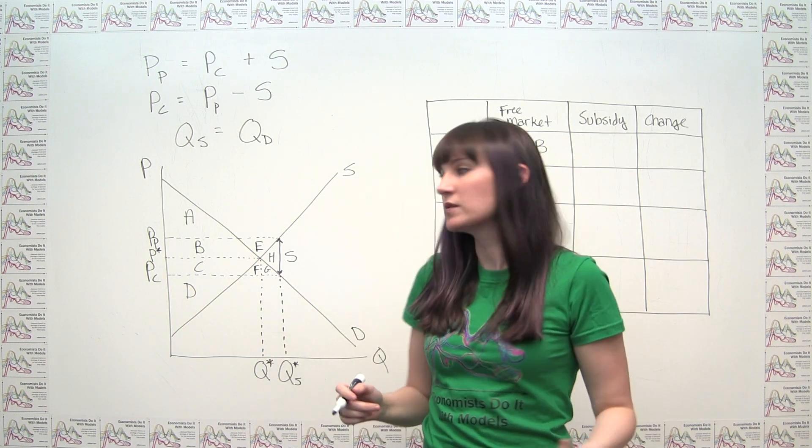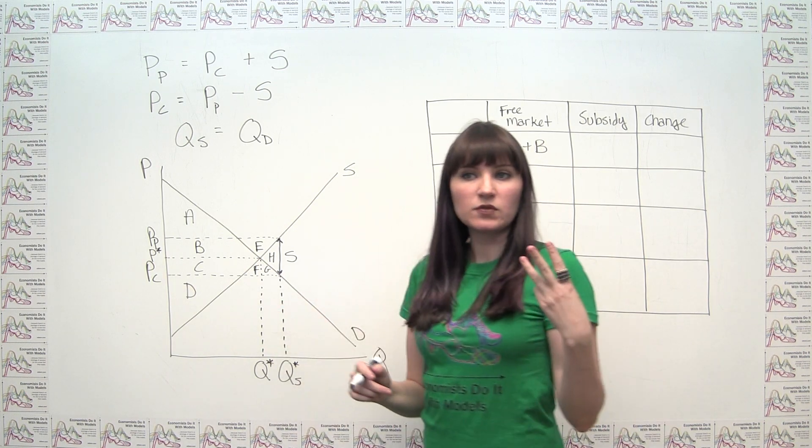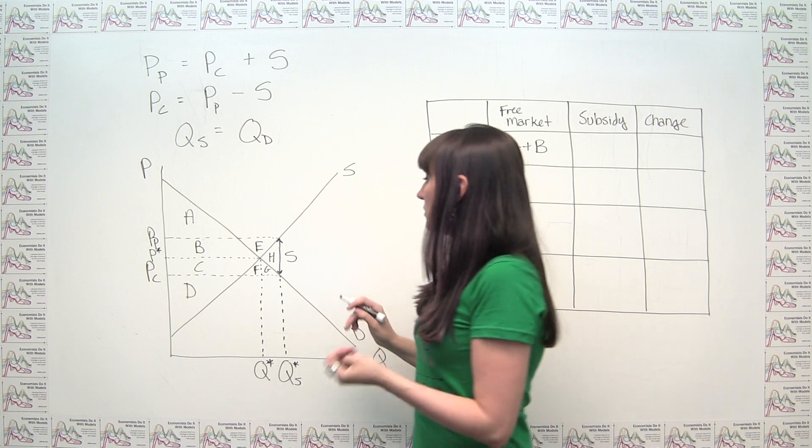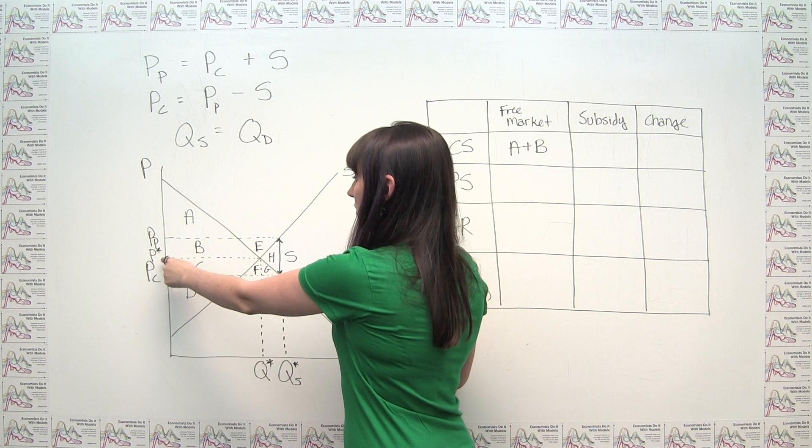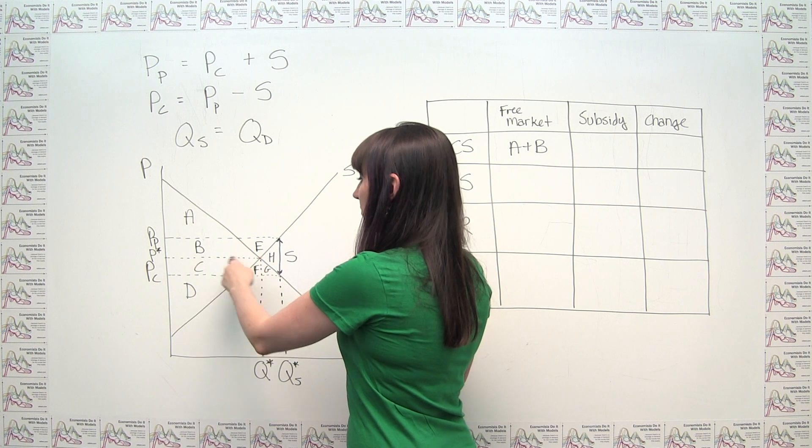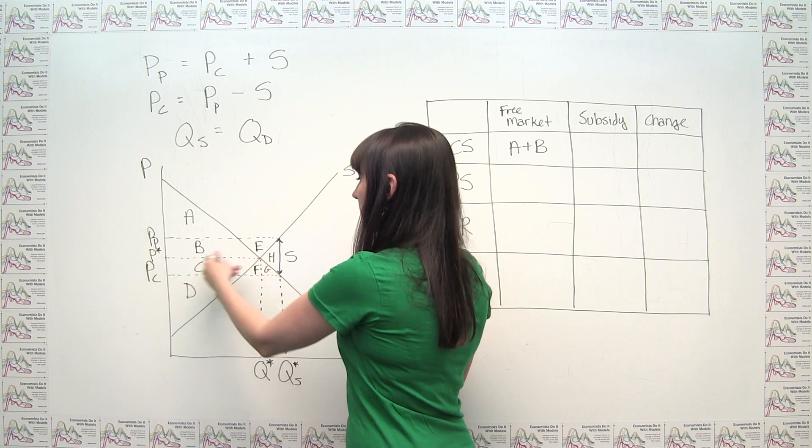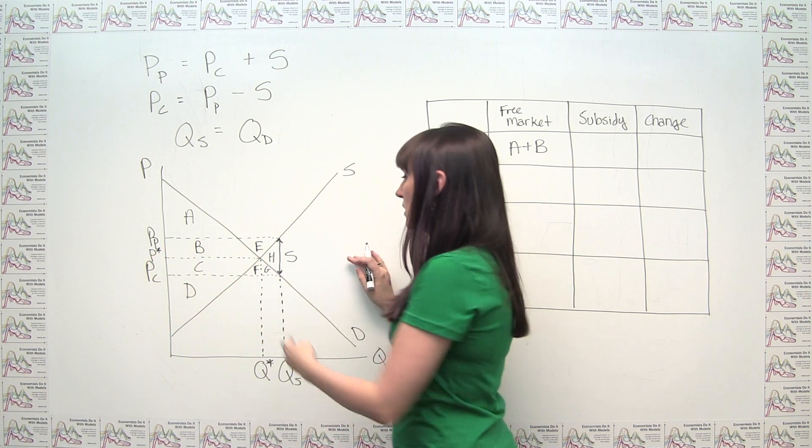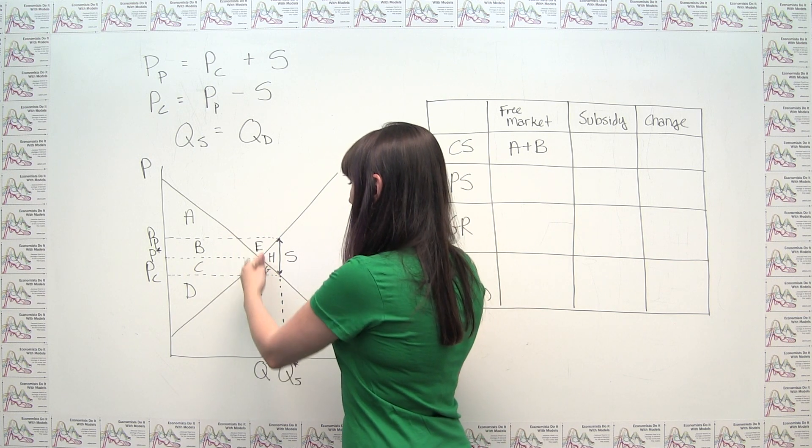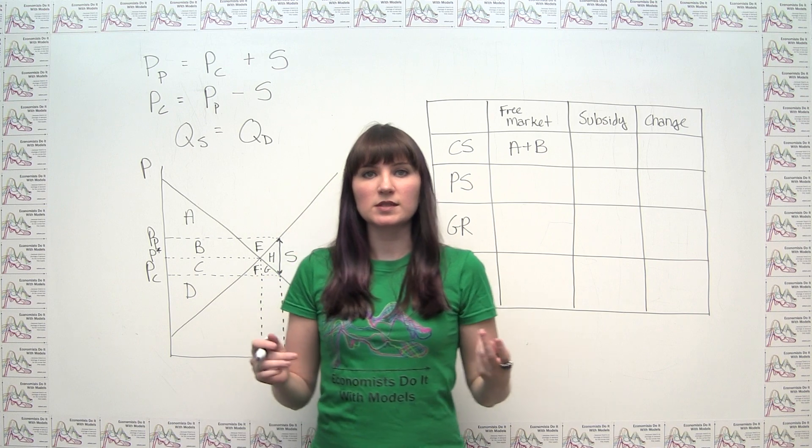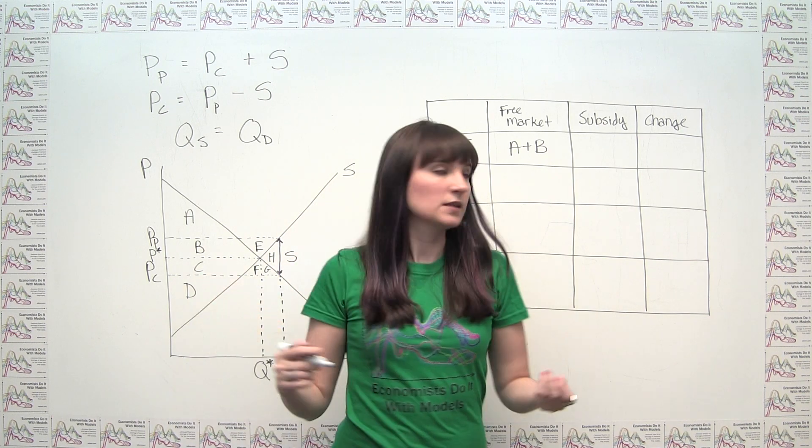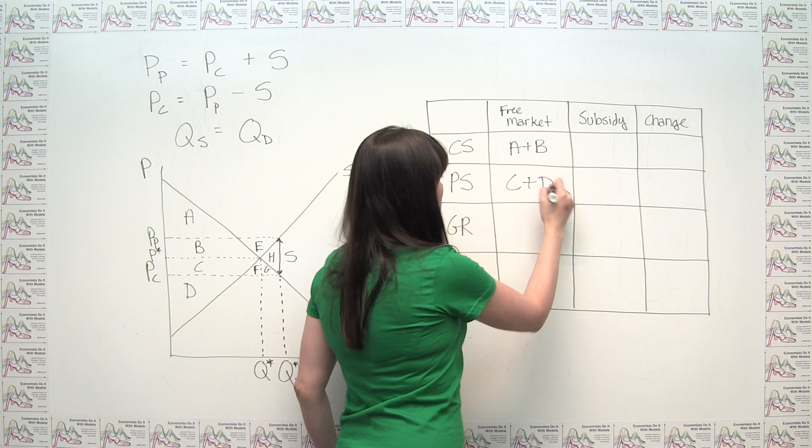I'm going to do the same for producer surplus. We have three rules for producer surplus. So producer surplus is the area above the supply curve, below the relevant price for producers, which again is still P star in our free market, and to the left of the quantity being transacted. So in our free market, we can see that producers get areas C and D. We put C plus D here.